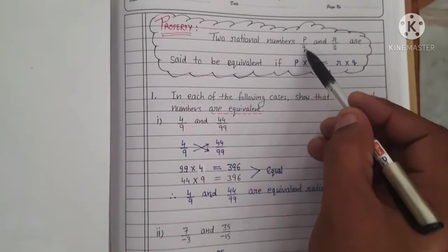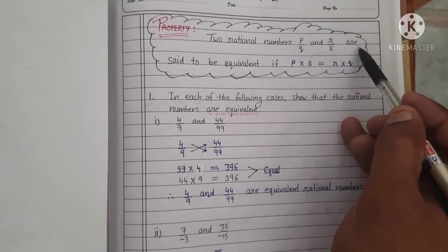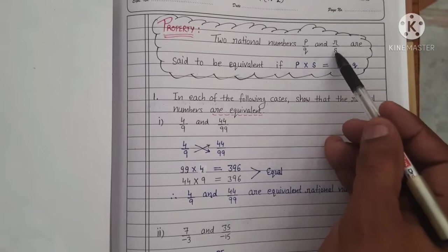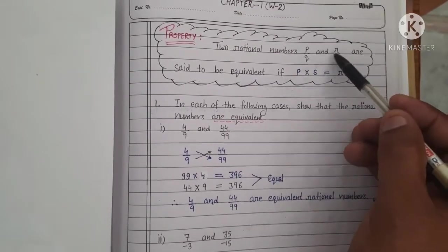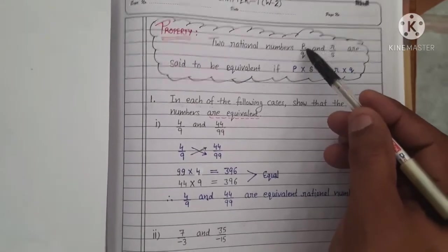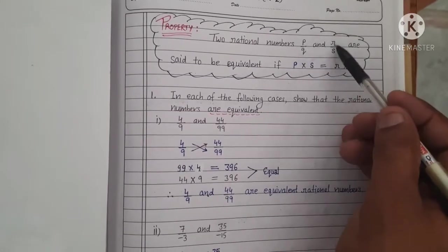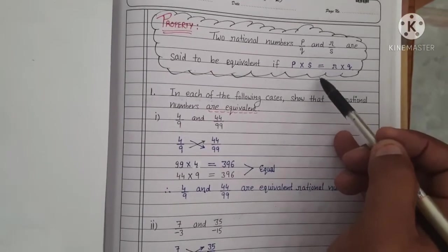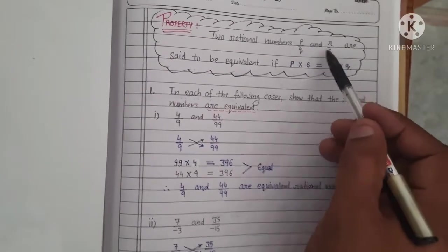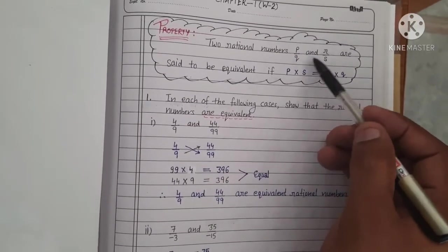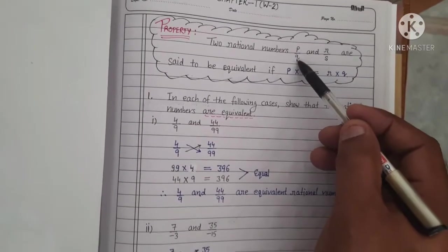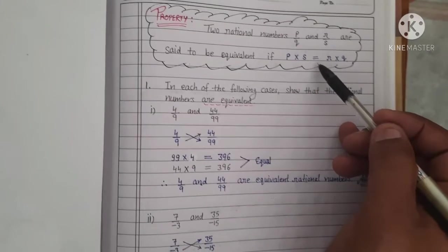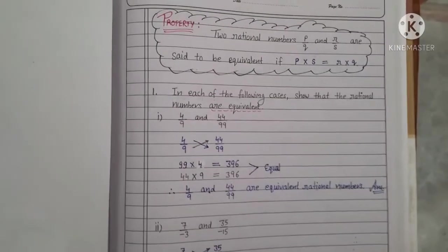Two rational numbers P upon Q and R upon S are said to be equivalent if P multiply S is equal to R multiply Q. Do rational numbers P upon Q aur R upon S ko hum equivalent tab bolenge jab unki cross product same rahe. Means P ko agar S se multiply karein aur R ko agar Q se multiply karein, to dono ki jo product hai wo equal hogi. Tab hi wo dono rational numbers equivalent bole jaenge.